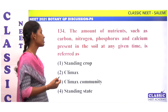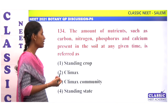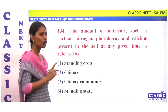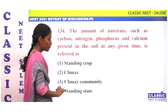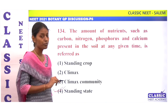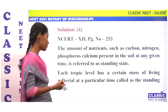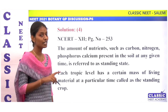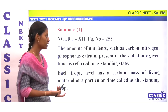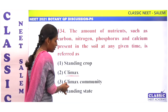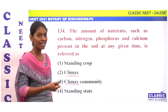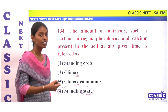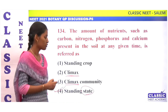The amount of nutrients like carbon, nitrogen, phosphorus, and calcium in the soil at a given time is called what? The amount of living material at a given time is called the standing crop. The answer is standing crop. Option 4.